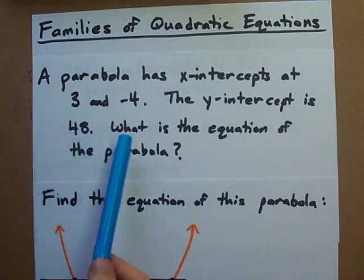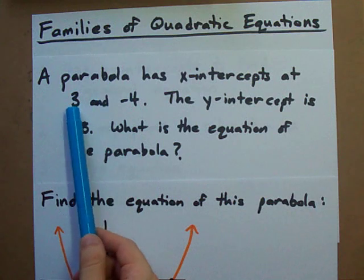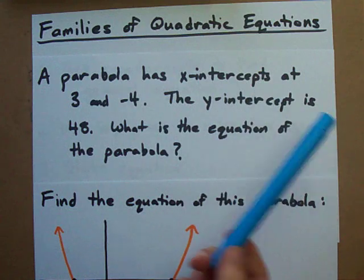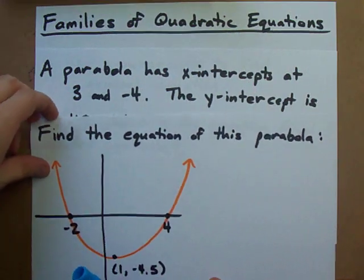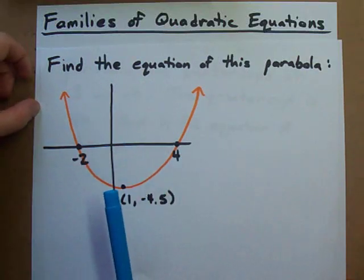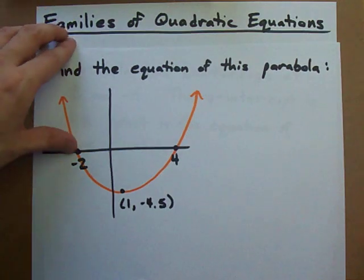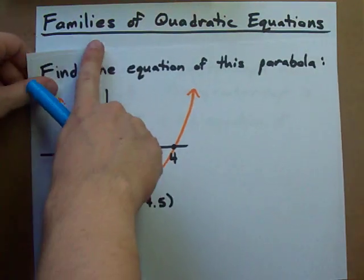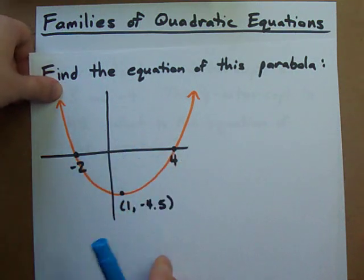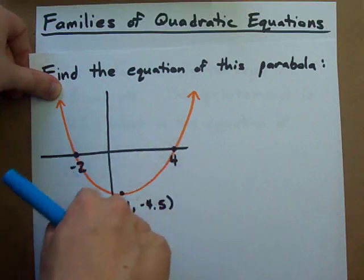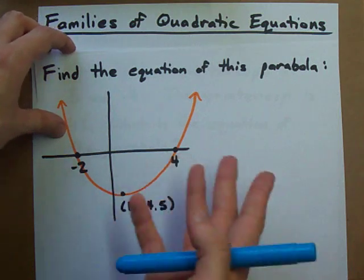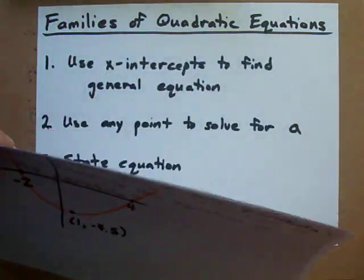What if you're asked for the equation of a parabola that has certain x-intercepts and all you're given is another point on the parabola? All of the parabolas that go through two particular x-intercepts form a family — whether they open up, down, are short, tall, or flattened out. They're all part of the same family because they share the same x-intercepts.